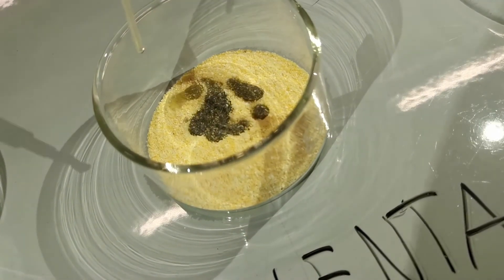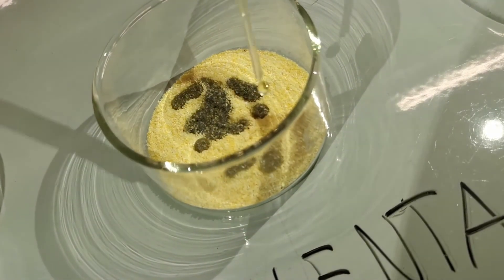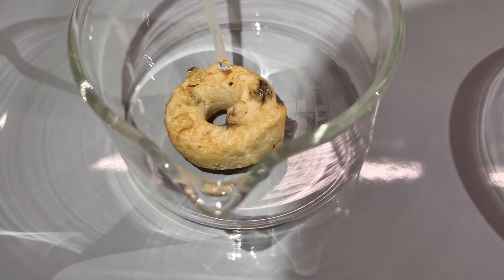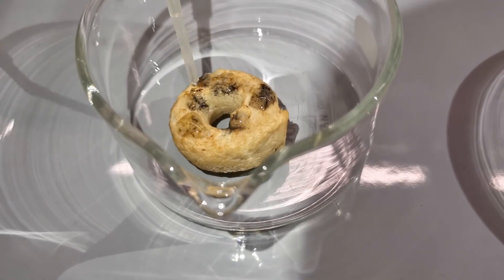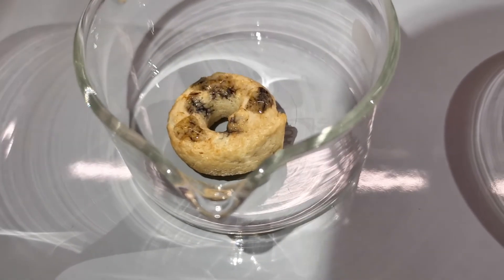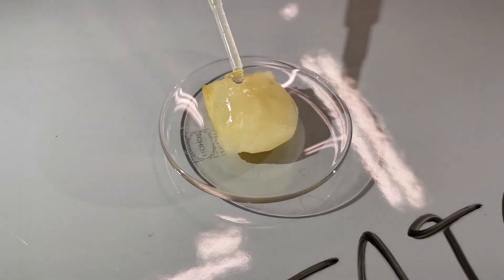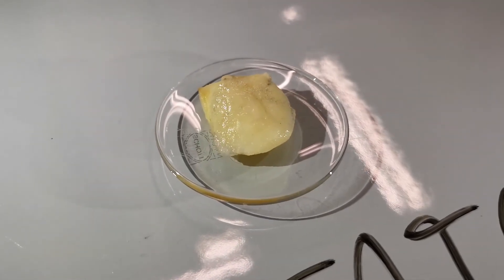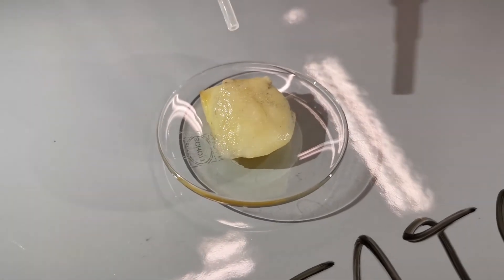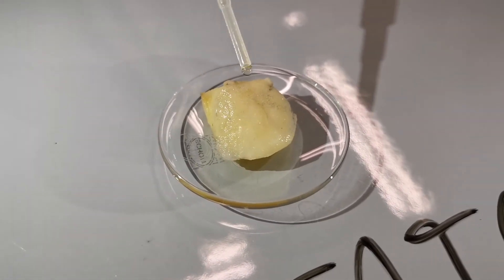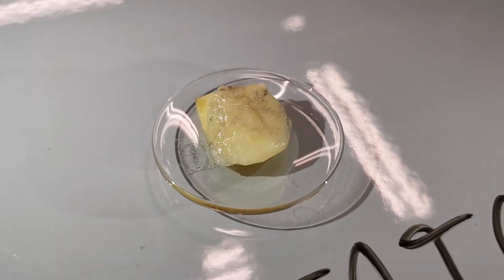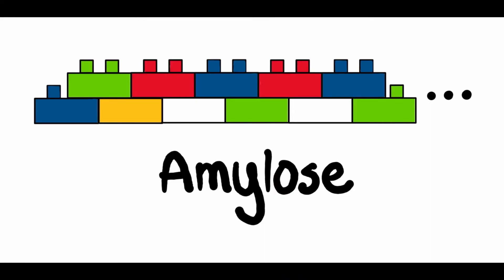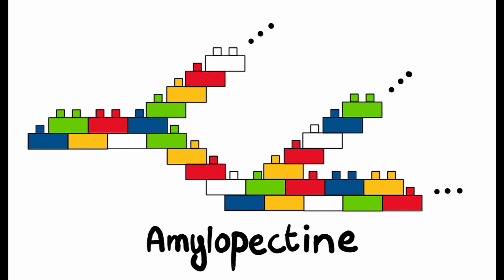You will observe that in some foods, when the iodine hits the food, almost immediately a dark blue or black color will appear. This is because iodine interacts with the polysaccharide found in starch. Starch can be found in foods like bread, potatoes, and rice. Starch has two subcomponents: amylose and amylopectin.